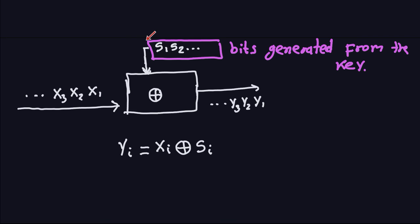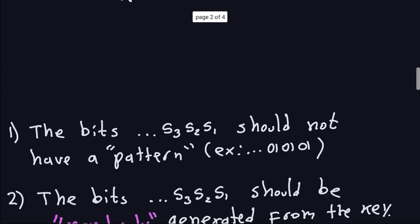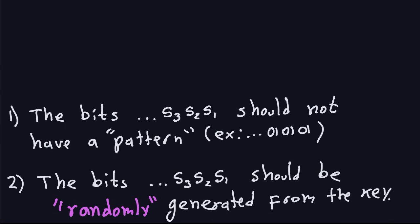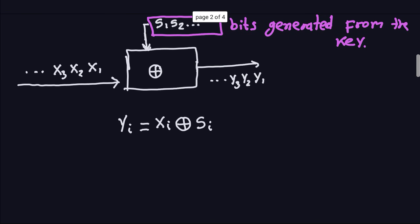You cannot make the plaintext X not have a pattern, because it's a message that should make sense on the other side — you cannot control that. But the key-generated bits you can control: they should not have a recognizable pattern. If you use something like 1, 0, 1, 0, 1, 0 — a repeating pattern — that's a terrible idea, because it will translate into a pattern in the ciphertext as well.